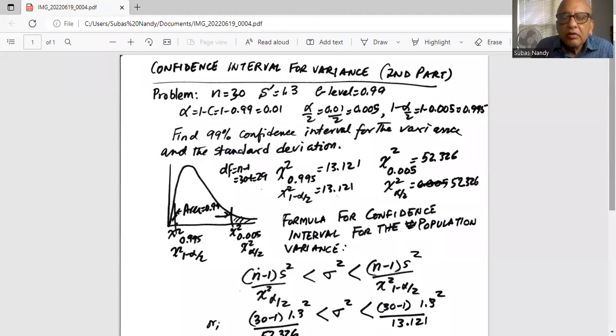So we want to find the confidence interval for variance and standard deviation. Okay, our sample size is 30, sample standard deviation is 1.3, C level is 0.9.